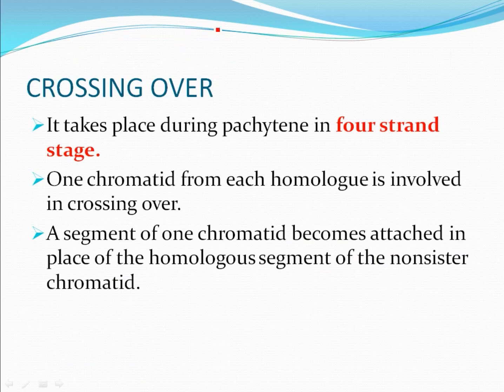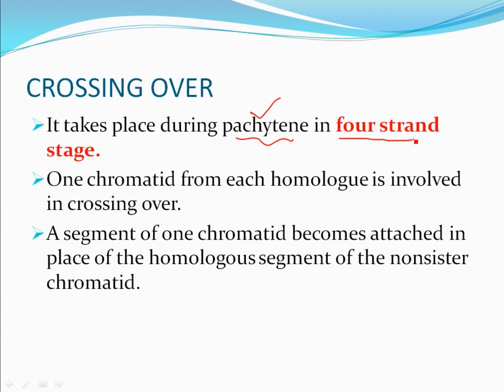Crossing over takes place during the pachytene stage — this question comes in every exam. It is a very basic question: crossing over takes place in pachytene, which comes in prophase I of meiosis. Crossing over does not occur in mitosis. It occurs in meiosis prophase I, specifically at the pachytene stage, and it occurs in the four-strand stage, meaning the tetrad stage.